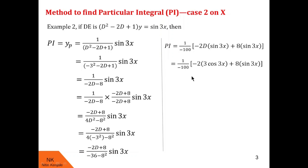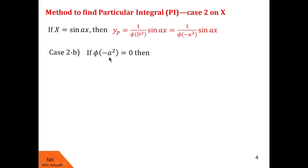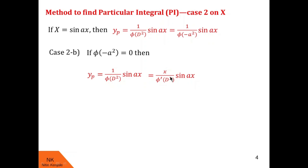This method of finding the particular integral by substituting d² as minus a² works provided φ(minus a²) is not equal to zero. If φ(minus a²) equals zero, then this method fails. In that case we put x in the numerator and take the derivative of the denominator with respect to d, so in the denominator we get φ'(d²), and sin ax remains as it is. We can then solve again by replacing every d² by minus a².